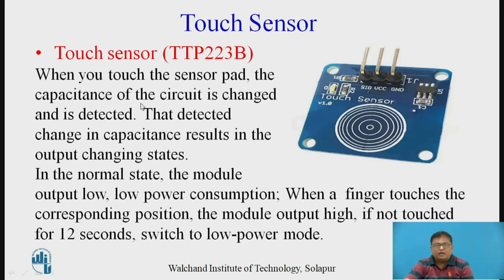When you touch the sensor pad, there is a change in capacitance, and this change is detected, which results in the output changing states. In the normal state — when there is no touch — this module outputs low voltage. When a finger touches the corresponding position on the touch pad, this module outputs high. If not touched for 12 seconds, the output will switch back to low.